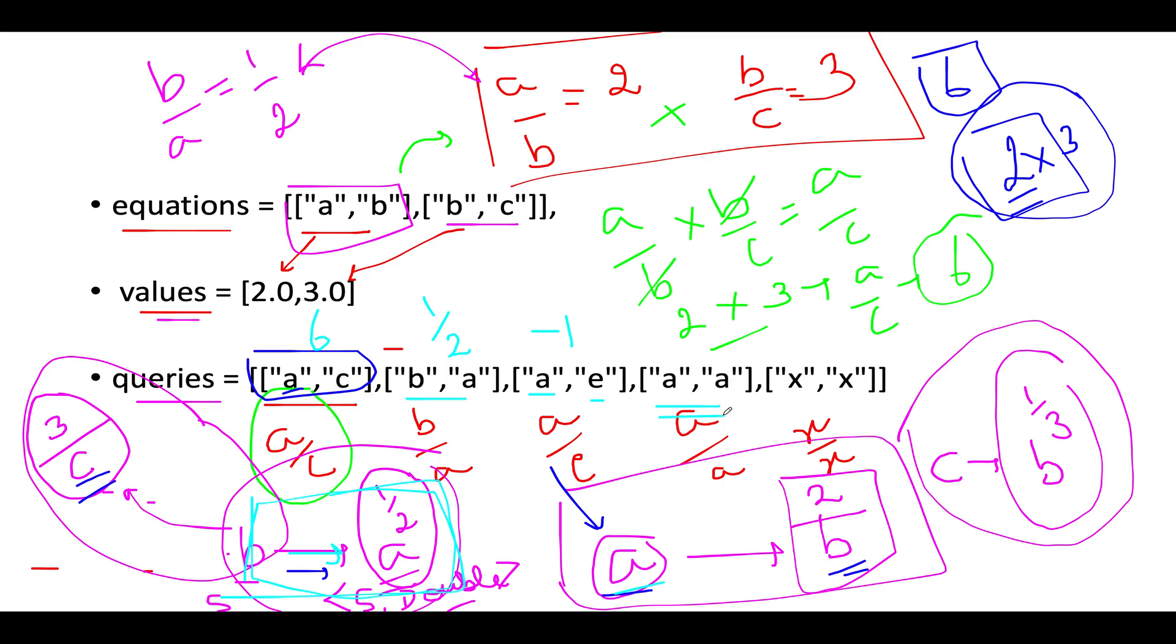Next is an interesting case: A,A. Whenever you see the target value equals your source value, check whether this source value is present in your graph. If it is present, simply return 1. This is an exclusive case we handle outside regular DFS operation. For X,X, the values are the same for source and target. However, X is not part of our graph, so we return -1.